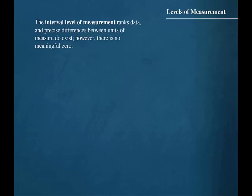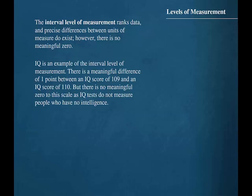The interval level of measurement ranks data and precise differences between units of measure do exist. However, there is no meaningful zero. IQ is an example of the interval level of measurement. There is a meaningful difference of one point between an IQ score of 109 and an IQ score of 110, but there is no meaningful zero to this scale as IQ tests do not measure people who have no intelligence.